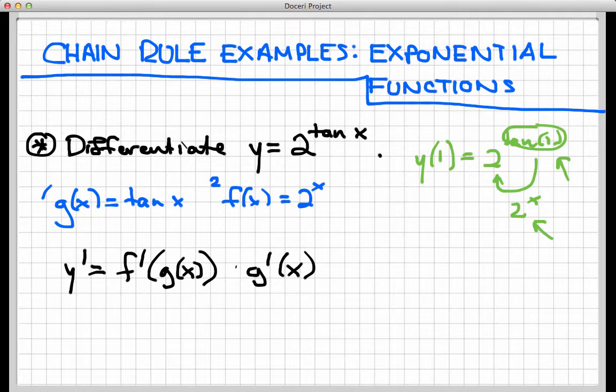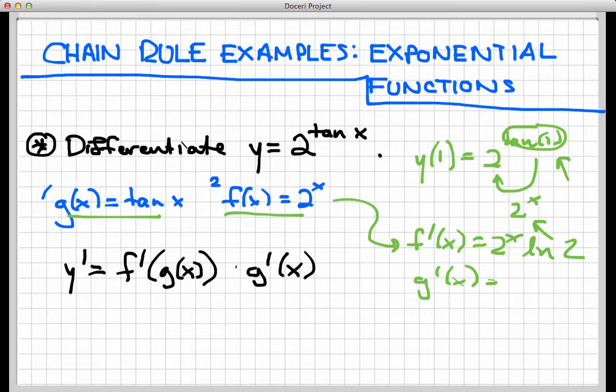So now let's just go through and think about what those derivatives are. The derivative of f, right here, we saw this is an exponential rule that we haven't seen in a while, but f prime of x is 2 to the x times the natural log of 2. And g prime of x, we saw in an earlier section is secant squared of x.